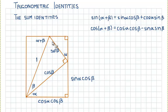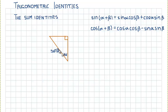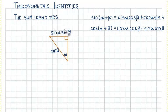Now we are going to look at the top triangle. It has hypotenuse sin β and this angle here is alpha. So the opposite side has a length of sin α times sin β, and the length of the other side is cos α times sin β.